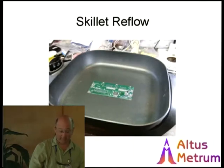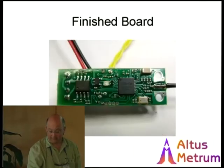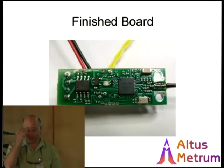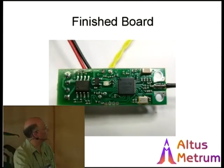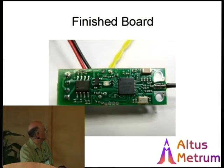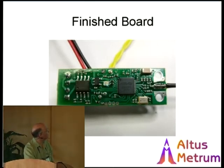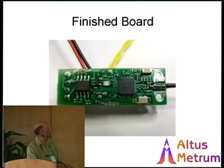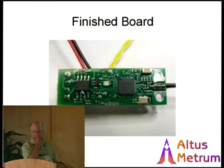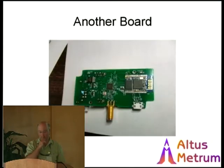Then somebody gets to program it. Here's an example of a finished board — this is an earlier flight computer. There's the little processor again with the radio matching circuit, a wire attached as an antenna, and the FET doing the ejection charges. We spent a lot of time making boards. This one also has Bluetooth — a commercial Bluetooth module with castellated connectors on the side. You just make a footprint, put a little solder on there, and cook it in the skillet.